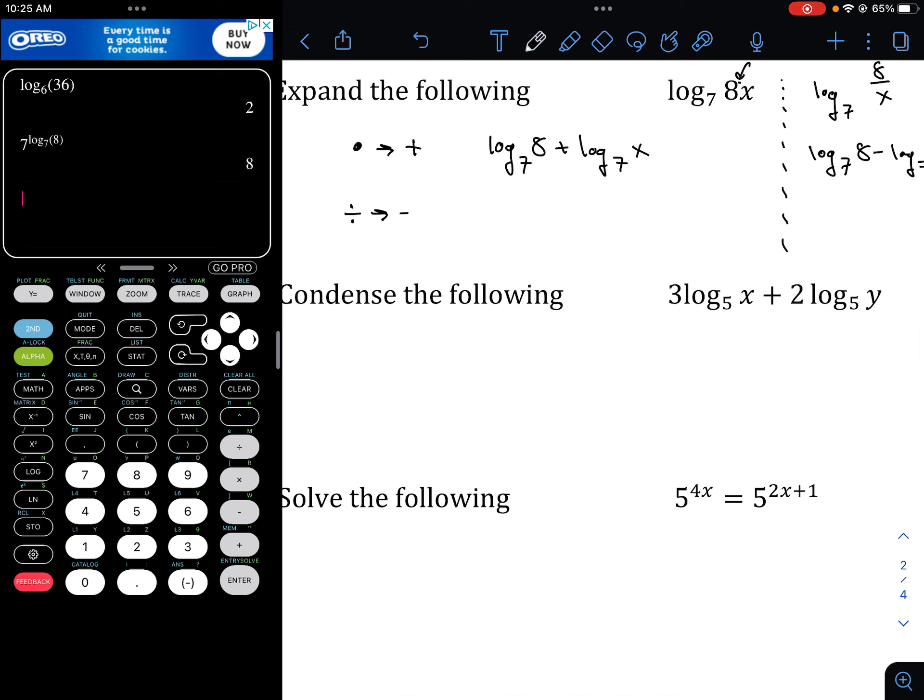Condense. So, going backwards. Remember numbers out front become exponents. So, x to the third plus log base 5 of x to the third y to the second. So, those become exponents. Then we have addition. Addition becomes multiplication. So, we're looking at log base 5 of x to the third y squared. And that is your answer.